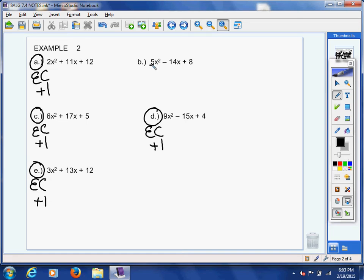B, we have a coefficient out in front, so remember 5 times 8 is positive 40. So I need factors of 40 that add up to be negative 14. I'm going to need some negative factors here because my middle term is negative.